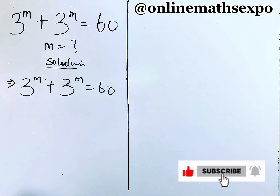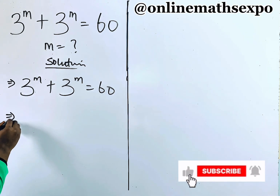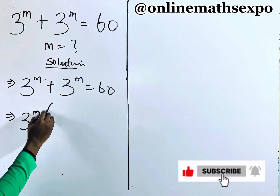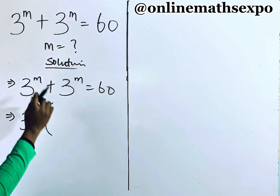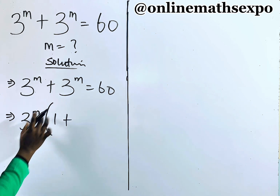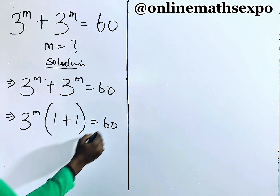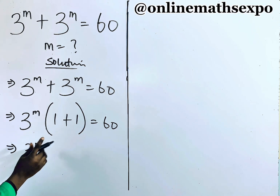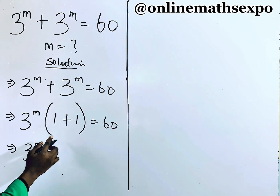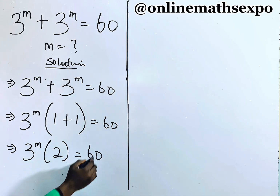Now, you observe carefully that this is repeated, so we are going to factor it out. Open a bracket — when this term itself is 1, then this term is 1 — is equal to 60. You keep simplifying: 3 to the power of m, add this, it gives you 2, is equal to 60.